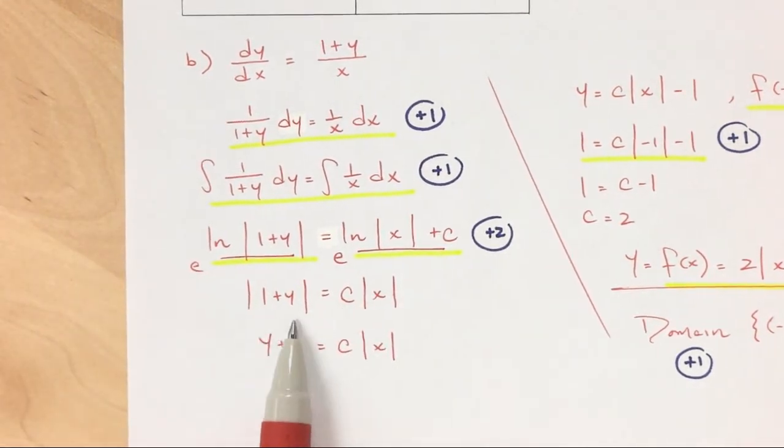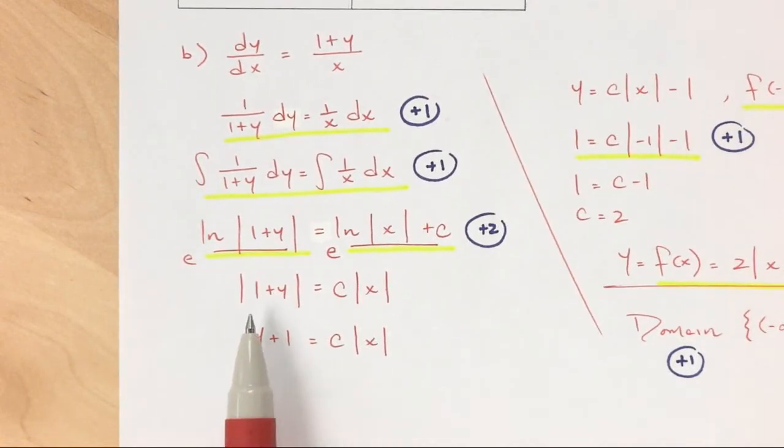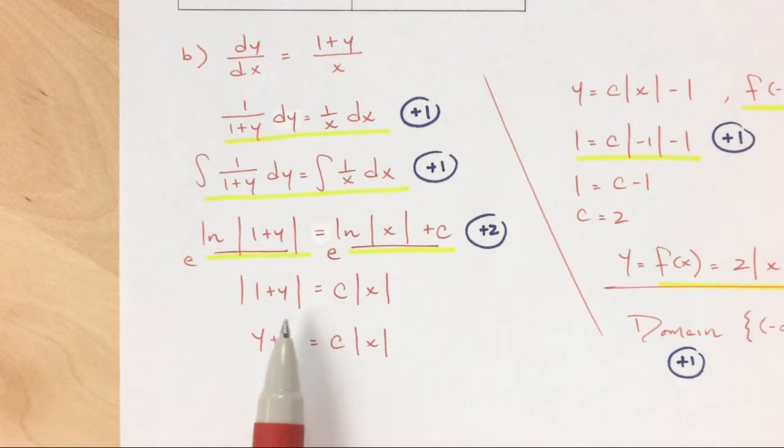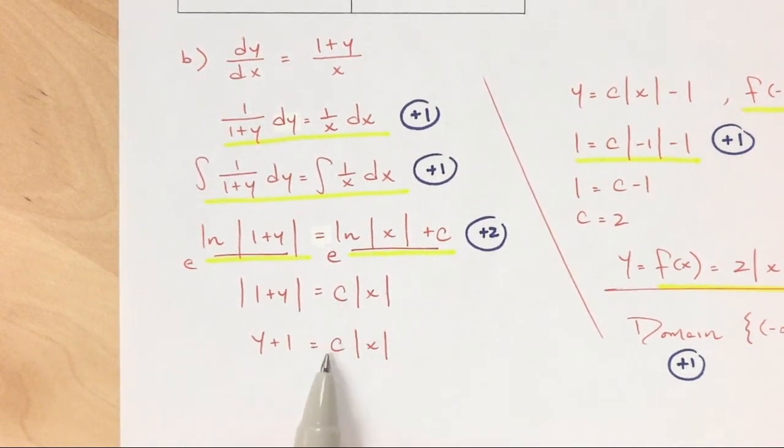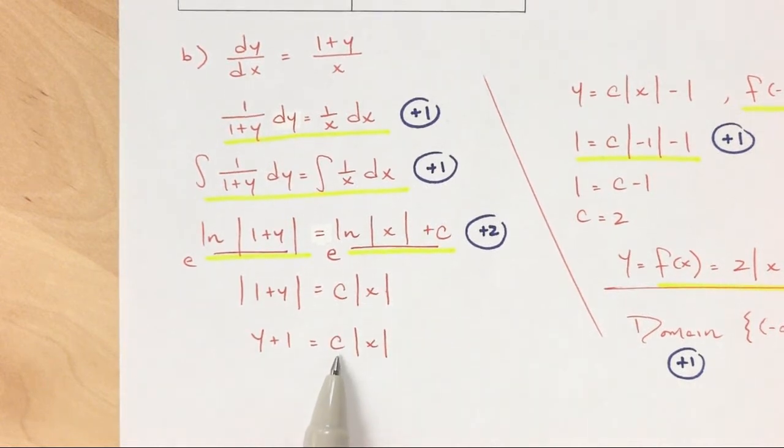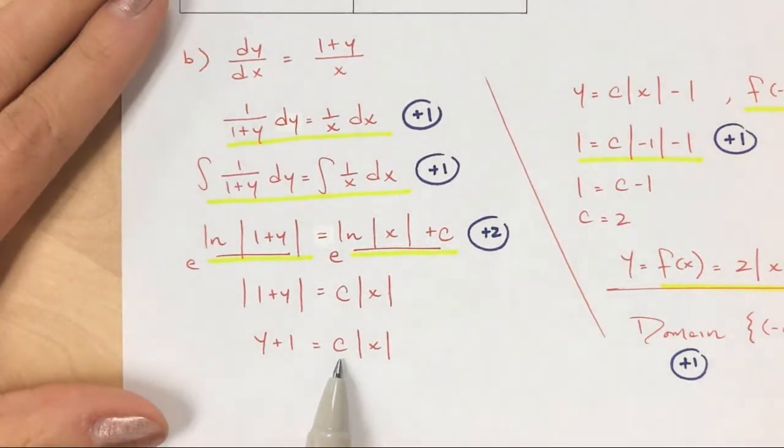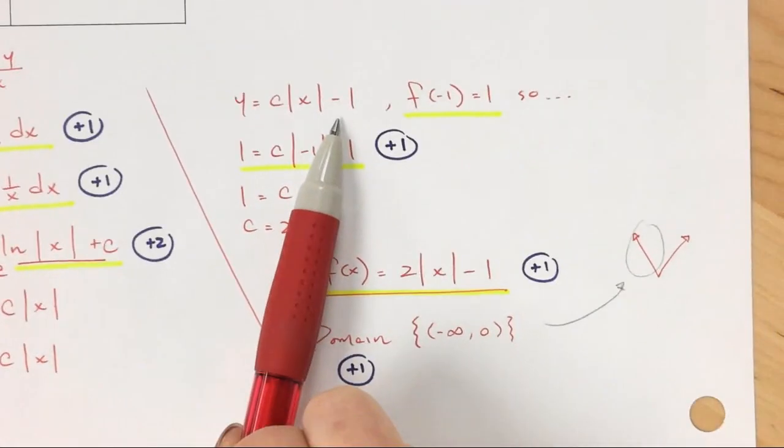So then I have absolute value equals absolute value. I am solving for y, though. So then I take my answer, or sorry, I take away my absolute value here. Normally, if I take away the absolute value on the left side, I would have a plus or minus. But again, c is already a plus or minus, so I don't need a plus or minus there. So y plus 1 equals, and then some number times the absolute value. And then I subtract 1 from both sides right here.